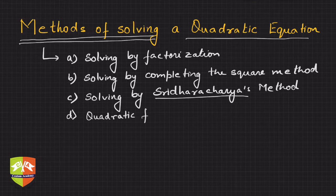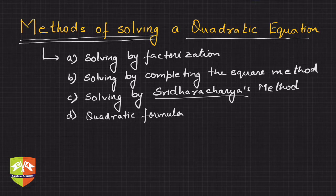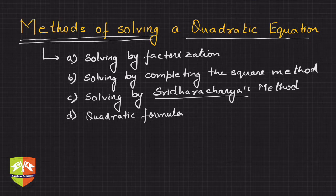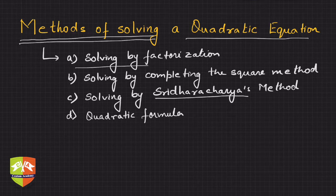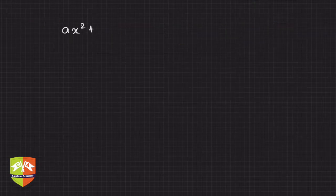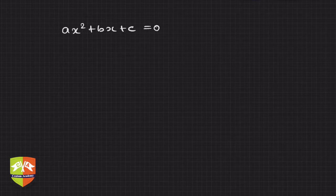However, all these methods are quite similar to each other — one leads to the other — so there is not much of a difference. But it is important to know these methods separately. So today let's start with solving by the factorization method. We are taking a quadratic equation ax² + bx + c = 0.